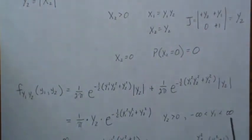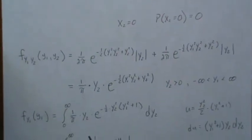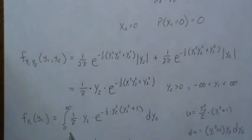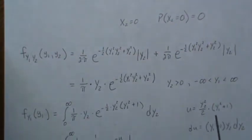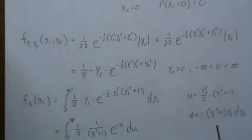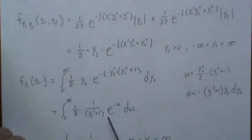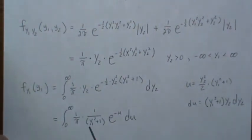X2 has to be positive and Y1 goes over the real number line. So now to find the density for Y1, we integrate out Y2 here, and Y2 has to be positive, so it's zero to infinity of this. Now we do a u-substitution.